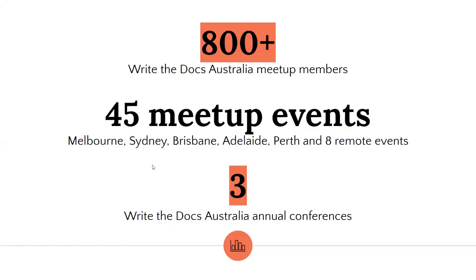A quick snapshot of where we are as a community: Write the Docs Australia has got over 800 members now, over the last four years. A lot of people want to join in, contribute, and share their experience and knowledge. We've done about 45 meetup events, a lot of them remote this year. In the last couple of years we've had webinars as well, and we've had three annual conferences.